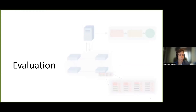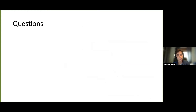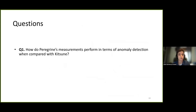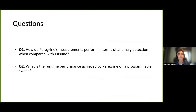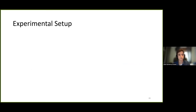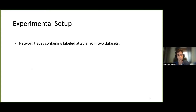I'll now present some results from our preliminary evaluation. Our ongoing evaluation process is focused on three questions: first, anomaly detection results — how do the measurements obtained by Peregrine perform as input to an anomaly detection classification pipeline when compared with Kitsune's? Second, what is the runtime performance achievable with Peregrine on a programmable switch? And third, what is Peregrine's resource usage on a programmable switch?